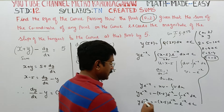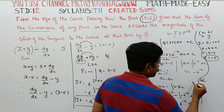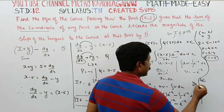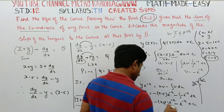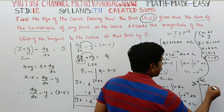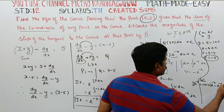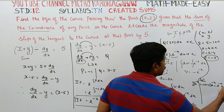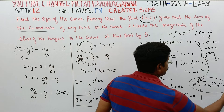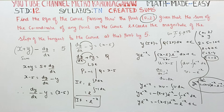Therefore the final solution is: y·e^(-x) equals minus(x minus 5)e^(-x) minus e^(-x) minus 2. This is the final solution for this problem. Thank you.